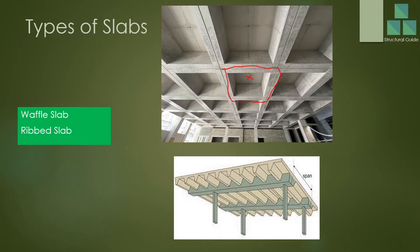In rib slabs, rib beams are present and the slab is constructed with closely spaced rib beams — hence the name. The span for each slab section is small. The shape of the rib beam may vary; a tapered shape is common, but rectangular beams can also be used if required.